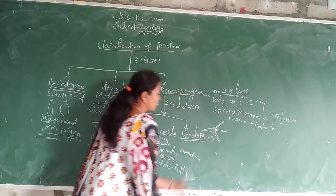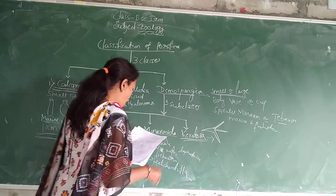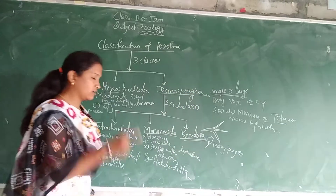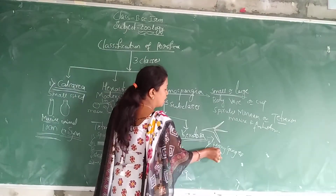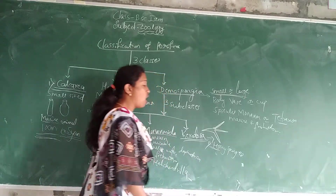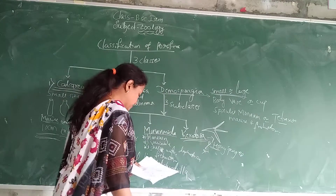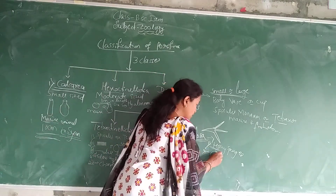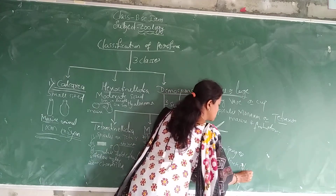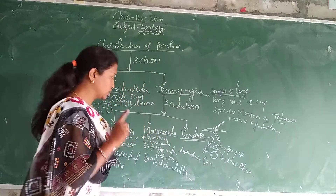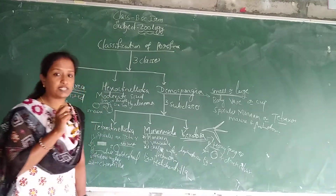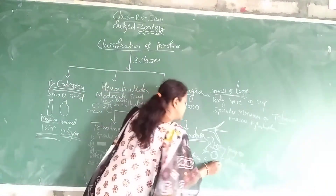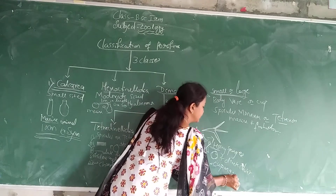The last subclass is Keratosa. This is having horny sponges — horny sponges are present instead of spicules. Body form is usually rounded and these are darkly colored animals. The example is Euspongia.